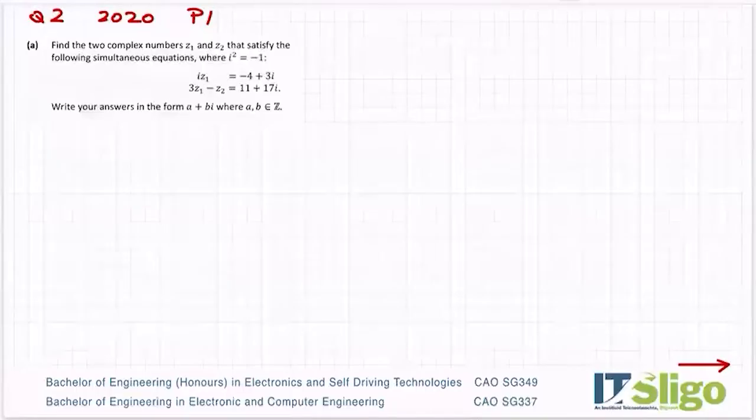Okay, this complex numbers question from 2020. Find the two complex numbers Z1 and Z2 that satisfy the following simultaneous equations: iZ1 equals minus 4 plus 3i, and 3Z1 minus Z2 equals 11 plus 17i. Write your answers in the form a plus bi.